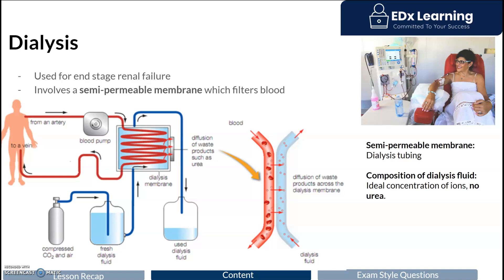We're going to be exploring the main treatment for kidney failure, and that is dialysis. Dialysis simply refers to a filtration system which aims to filter blood and perform the functions of the kidney. This can be outside the body, as you can see here with hemodialysis, or it can happen inside the body, as you see with peritoneal dialysis.